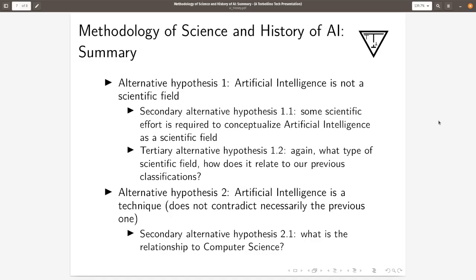Alternative hypothesis one is artificial intelligence is not a scientific field. Secondary alternative hypothesis 1.1 is some scientific effort is required to conceptualize artificial intelligence as a scientific field. Tertiary alternative hypothesis 1.2 is again what type of scientific field? How does it relate to our previous classification?